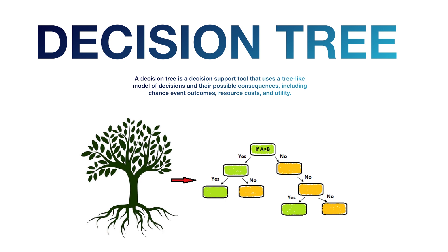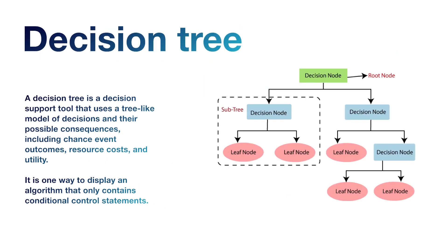If A is greater than B — yes, it will go for green color; no, it will go for orange color. If it is no, what are the reasons? If it is yes, it will turn green. Decisions can be made based on the possibilities and consequences of events, outcomes, cost, budget, timeline, utility, and resources.